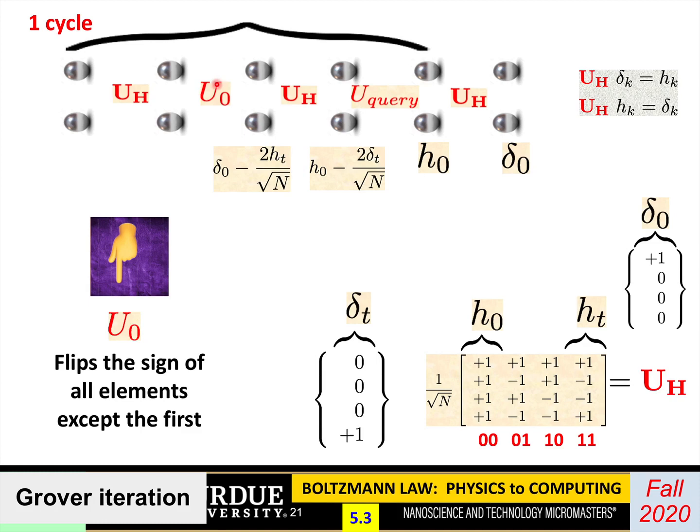Next, we have this U0 gate, and its job is to flip the sign of all the elements except for the first one. So the first one stays what it is, but all the other elements are flipped. Again, if this was a course about quantum computing, we'd talk about the kind of circuits you could use to actually do that. You'd need one of these controlled gates, but we won't go into it. The question is, what does that do to what we had? The delta 0 is unaffected. Why? Because delta 0's only non-zero element is the first one, and we're doing nothing to the first one anyway. First one is plus 1, stays plus 1.